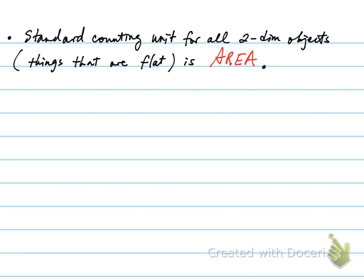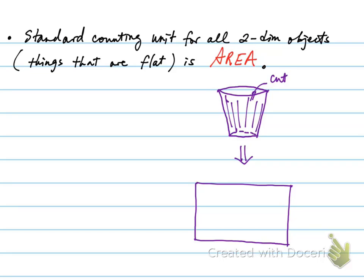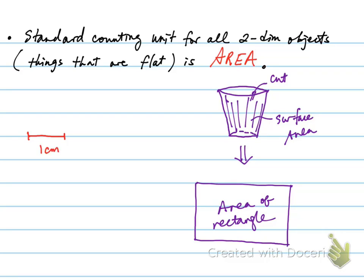The standard counting units for all two-dimensional objects, which are things that are flat, is area. For example, if you wanted to know how much material is used to make a paper cup, you would be calculating what we call the surface area. If you imagine the paper cup is super thin — taking up no volume — then if you cut the paper cup along the rim and flatten it out, it becomes like a sheet of paper. To get the counting unit for two-dimensional objects, we start with the one-dimensional counting unit, which is a line segment, and simply stack these line segments to form a square. If I'm using one centimeter as my counting unit, imagine stacking a bunch of these line segments packed so finely that there's no gap in between.